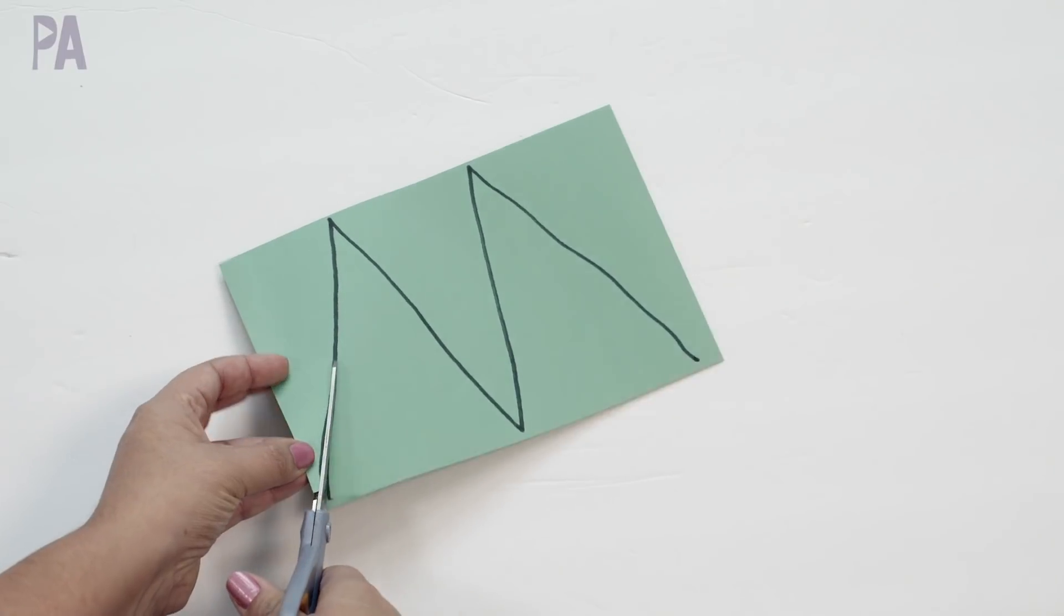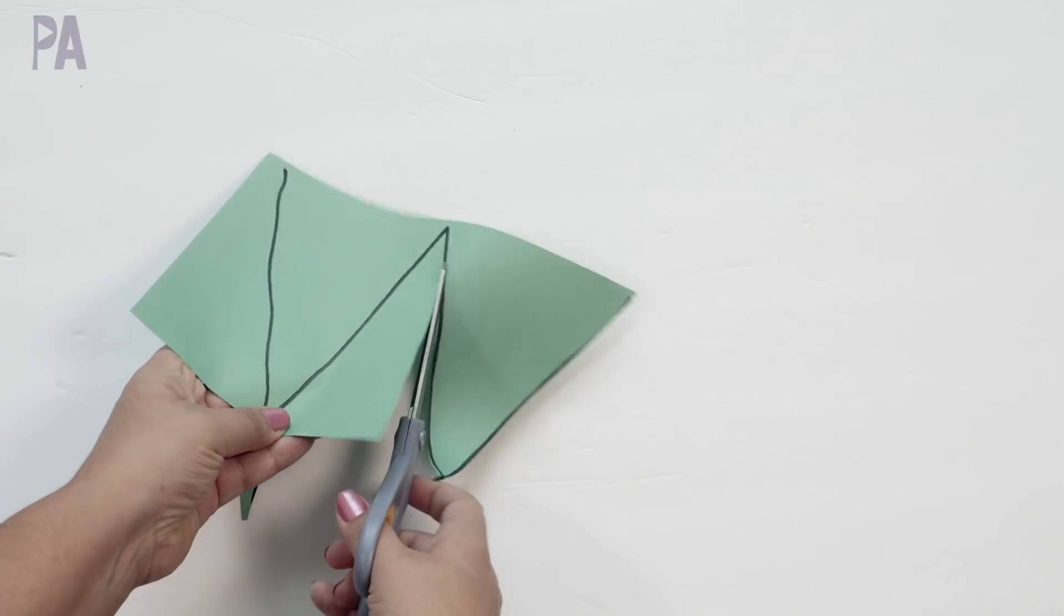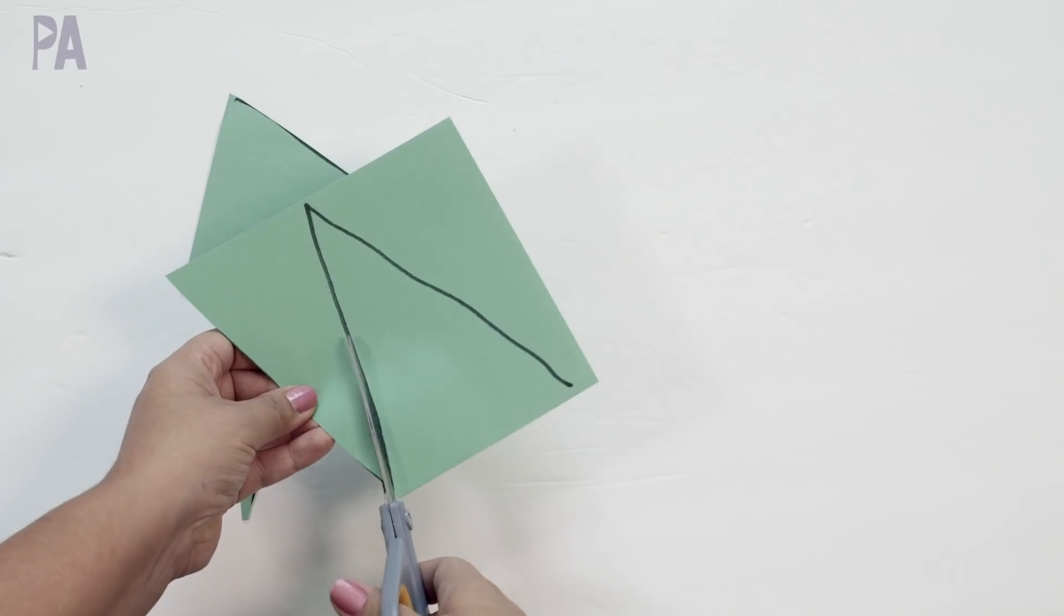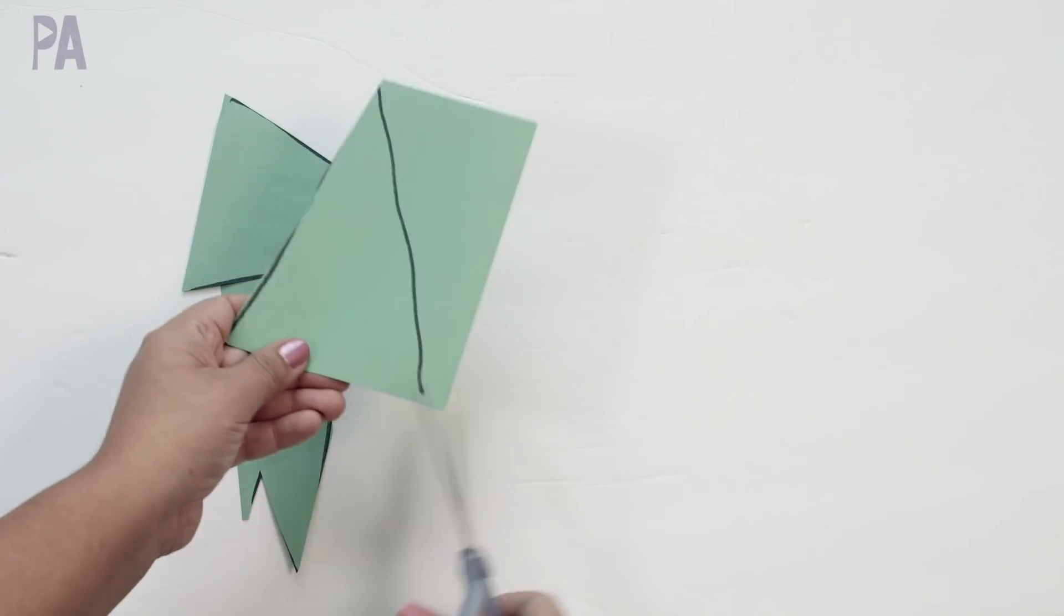And they're going to cut along the line. And we all know that cutting is a great exercise for kids and they need to have those cutting skills down. So this is a great opportunity to do that. Then we can use what they cut out for more activities that I'm going to show you.